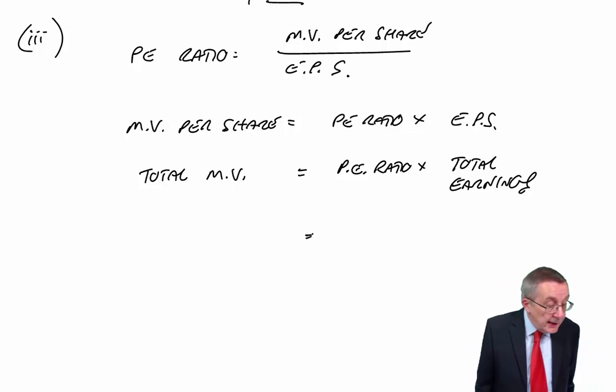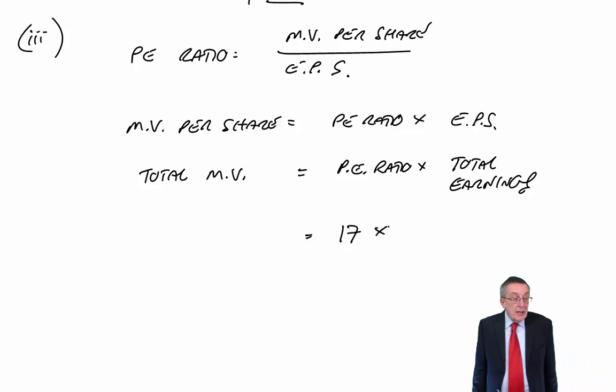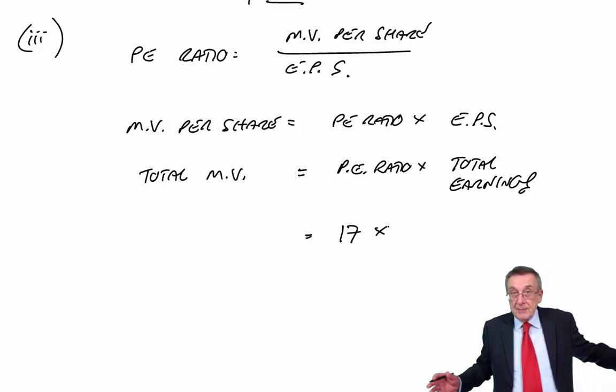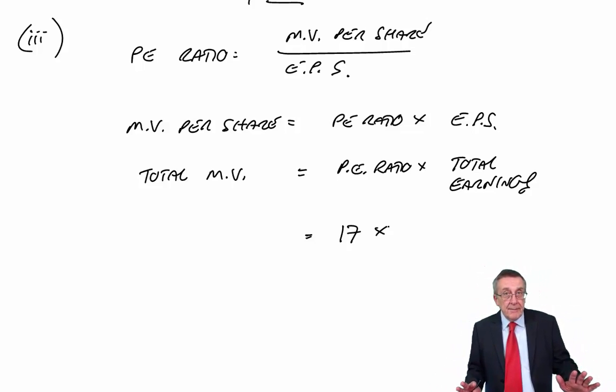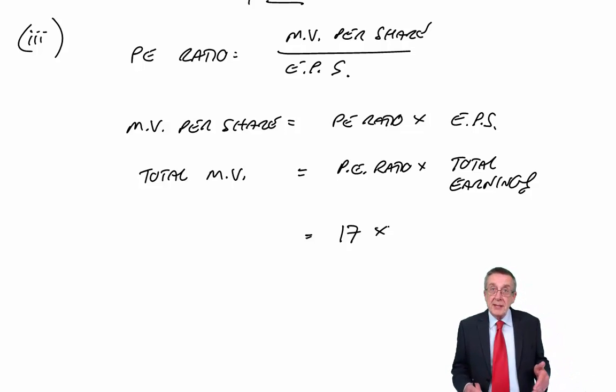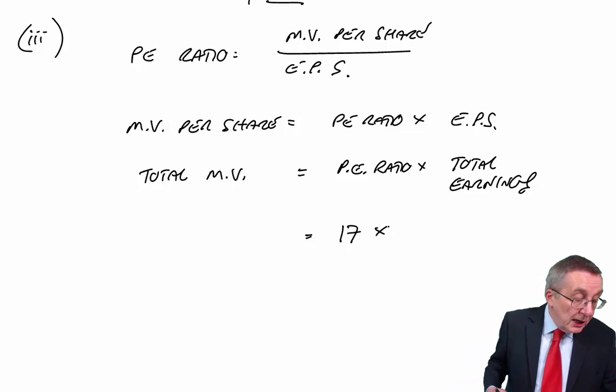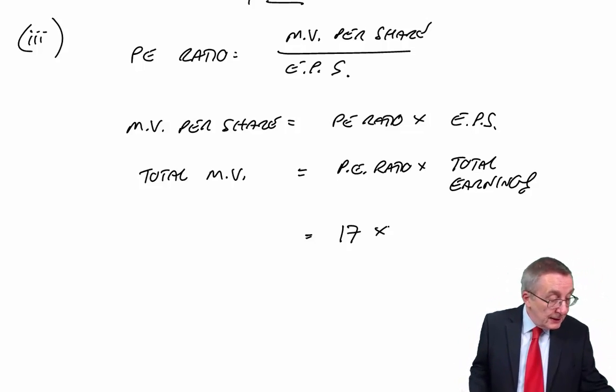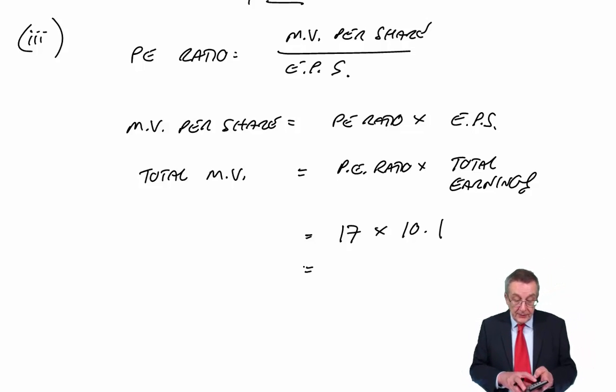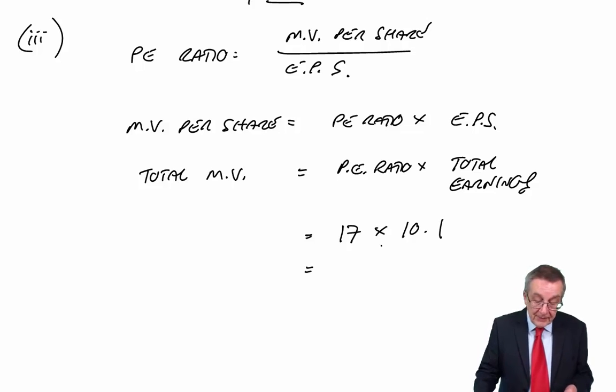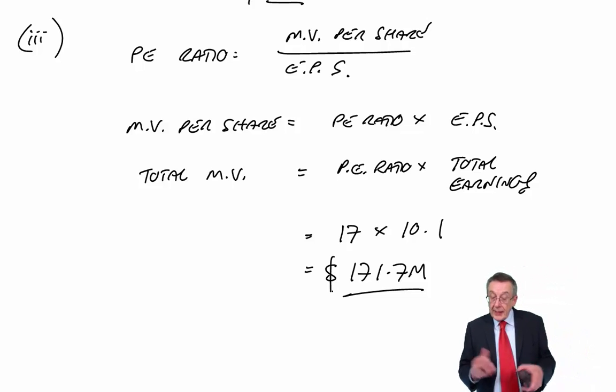But here, what is the average P/E ratio? The average price-earnings ratio is 17. P/E ratio is always measured based on current earnings, current market value. So the current earnings, the profit after tax 2012, are 10.1, which gives a market value of 17 times 10.1, 171.7. Now that's the right answer.